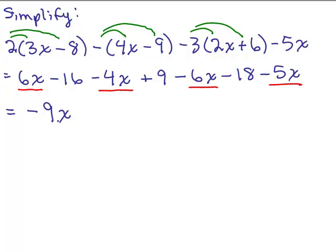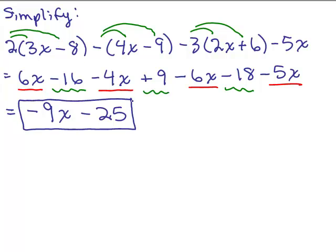You have to be very careful with adding the positive and negative numbers, subtracting, et cetera. Now let's do the numerical parts — the constants. There are only 3 constants: negative 16, plus 9, and negative 18. I'm just going to go left to right. Negative 16 plus 9 is negative 7. And then negative 7 and negative 18 makes negative 25, so it's minus 25. Now keep in mind, I'm adding like terms — don't multiply it. It doesn't mean negative 9x times negative 25.